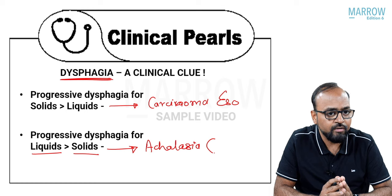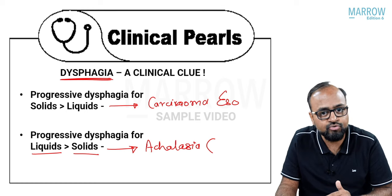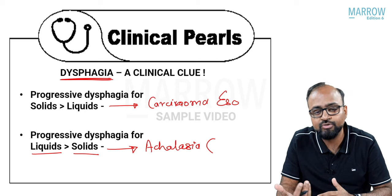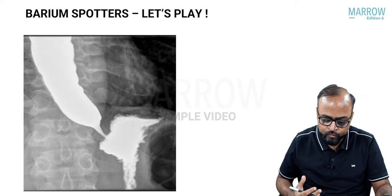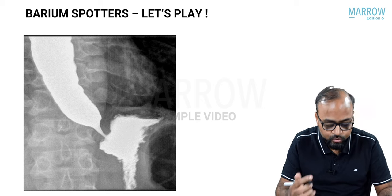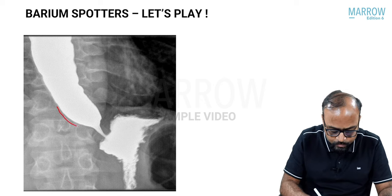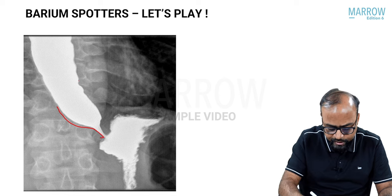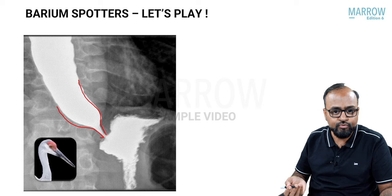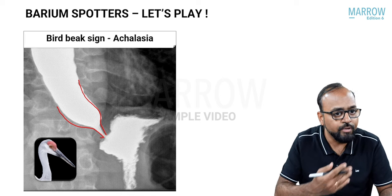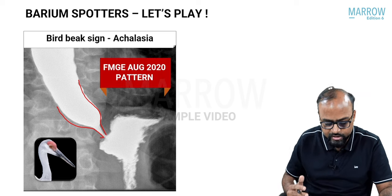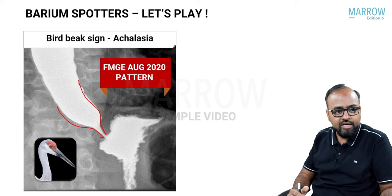Dysphagia more for solids than liquids points towards CA esophagus; more for liquids than solids points towards achalasia. In a patient with dysphagia more for liquids, barium shows a uniform smooth elongated tapering like a bird's beak at the lower esophageal sphincter — this is the bird beak sign of achalasia cardia.